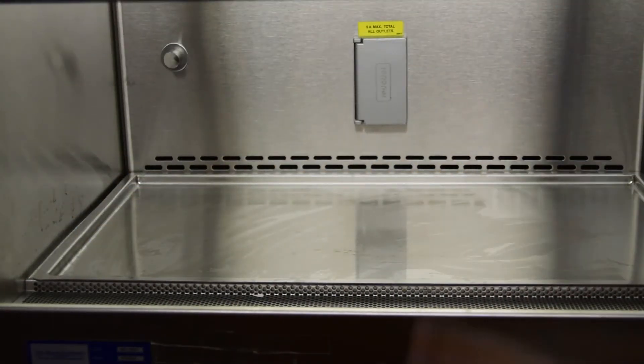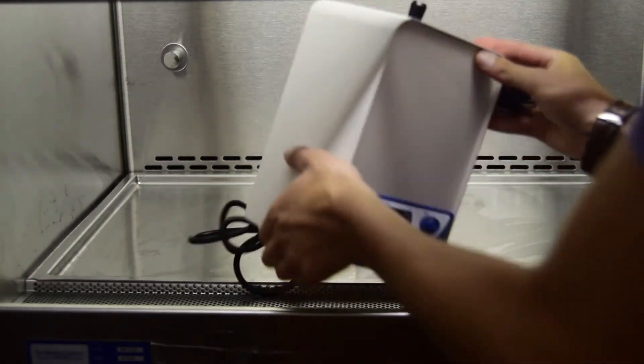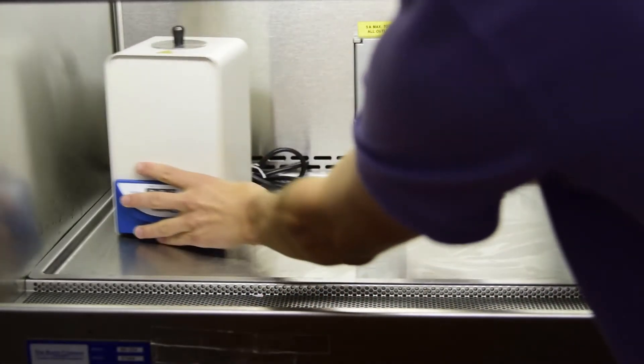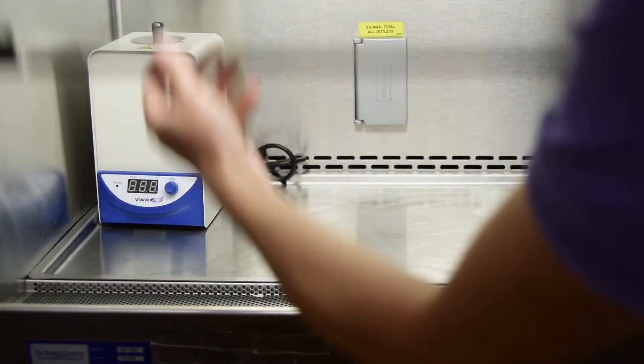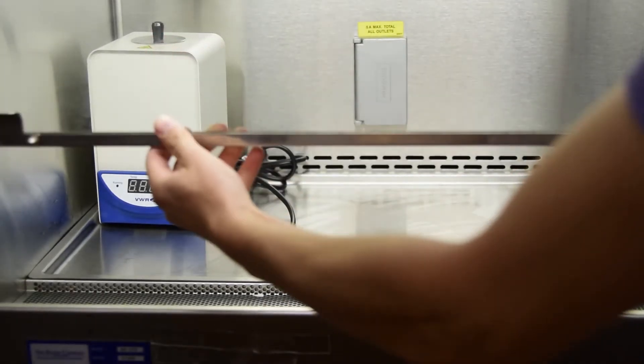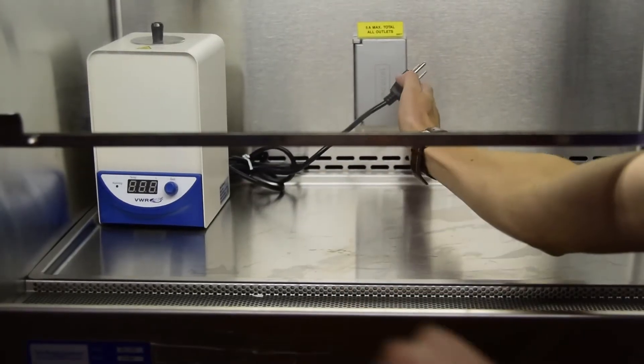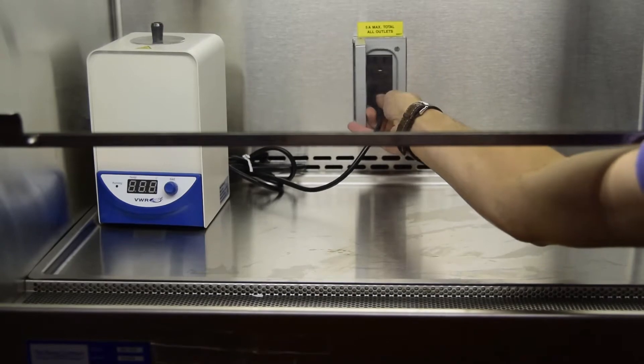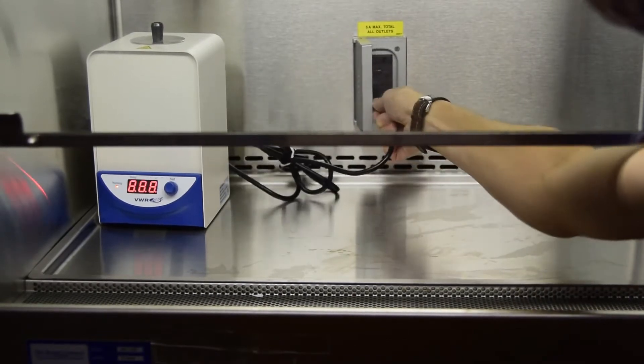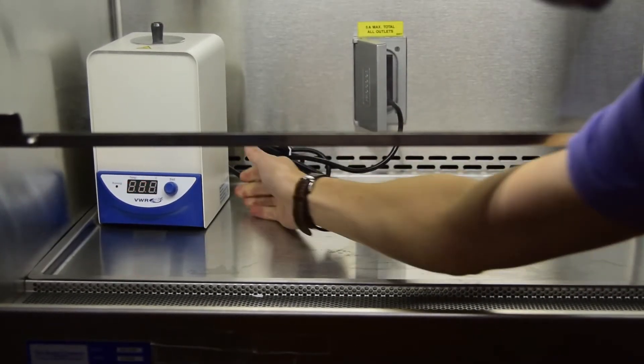Place the bead sterilizer inside, opening the sash a bit higher to fit it through. Keep the sterilizer upright to avoid spilling glass beads. Plug it in and turn on the switch in the back.